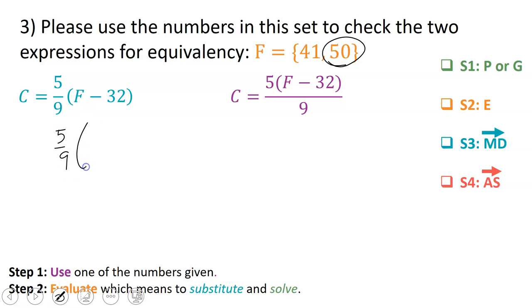So I take the 5 ninths, and I multiply it by 50 minus 32. Let's go ahead and subtract 50 minus 32, and I get 18. And then I multiply 5 ninths by 18. Remember, to multiply 5 ninths by 18, you place 18 over 1.